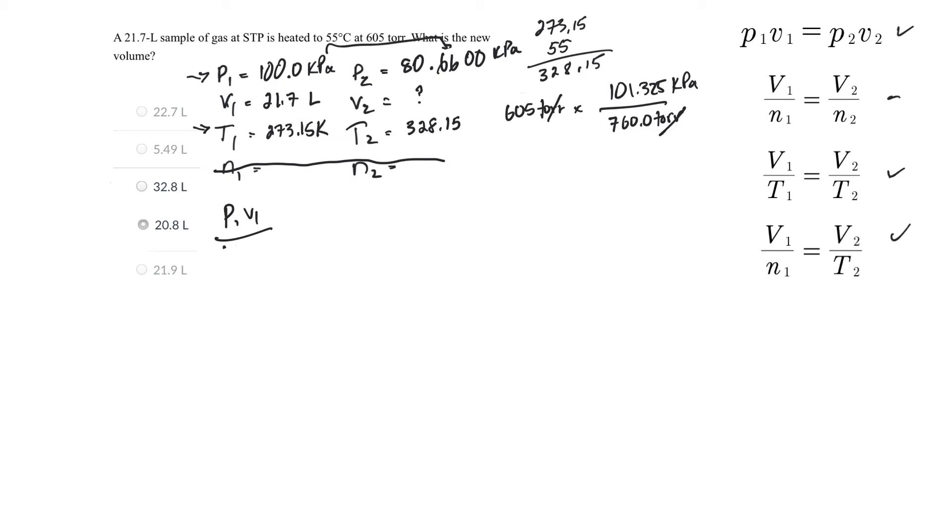And that one is P1V1 over T1N1 is equal to P2V2 over T2N2. So pressure and volume are inversely related. And the temperature and the number of moles are directly related to volume. And apparently they're directly related to pressure too.